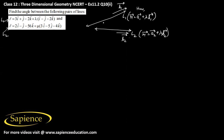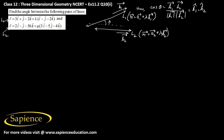We have to find the angle theta between these two straight lines. We know that cos theta will be equal to B1 dot B2 divided by mod of B1 times mod of B2, which is simply B1 cap dot B2 cap.